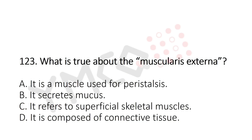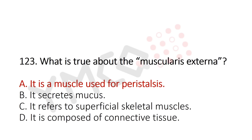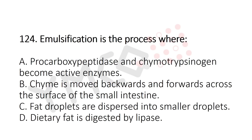Now Question 123: What is true about the muscularis externa? Option A: it is a muscle used for peristalsis, Option B: it refers to superficial skeletal muscle, Option C: it is composed of connective tissue. The answer is Option A: it is a muscle used for peristalsis.